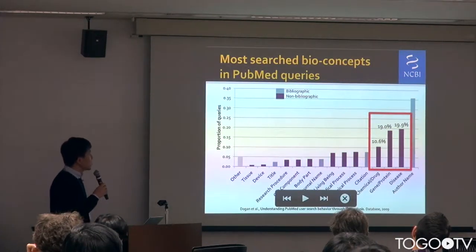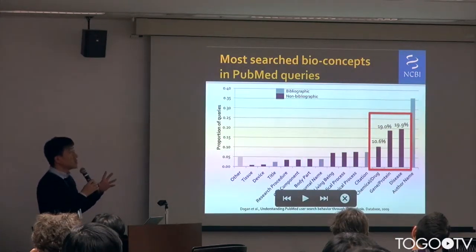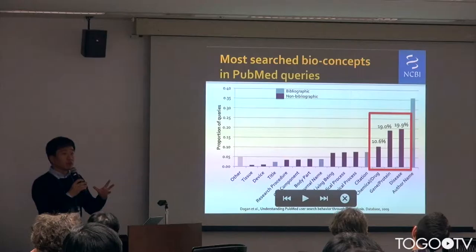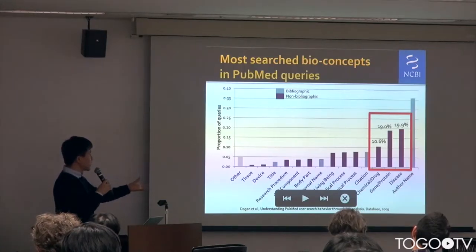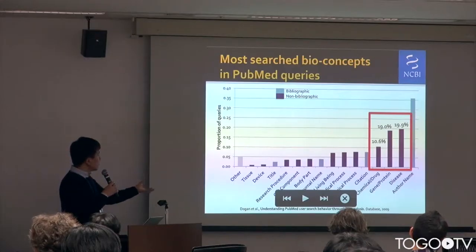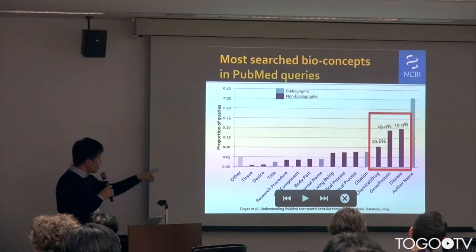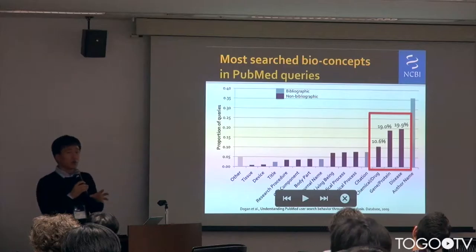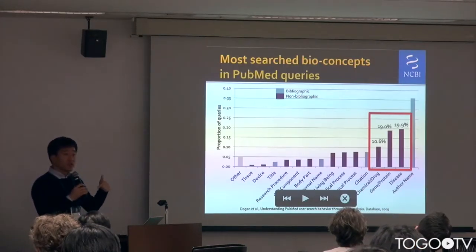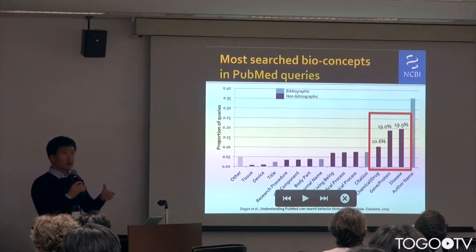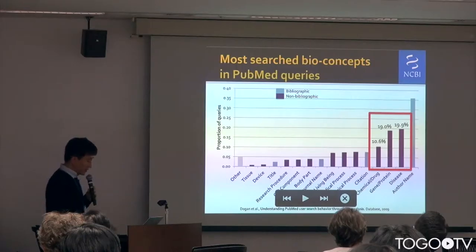This picture shows why named entity recognition is so important for analyzing or querying text literature. Almost half of the queries are about bio concepts in the text, so we need a very precise named entity extraction and recognition system for these things.